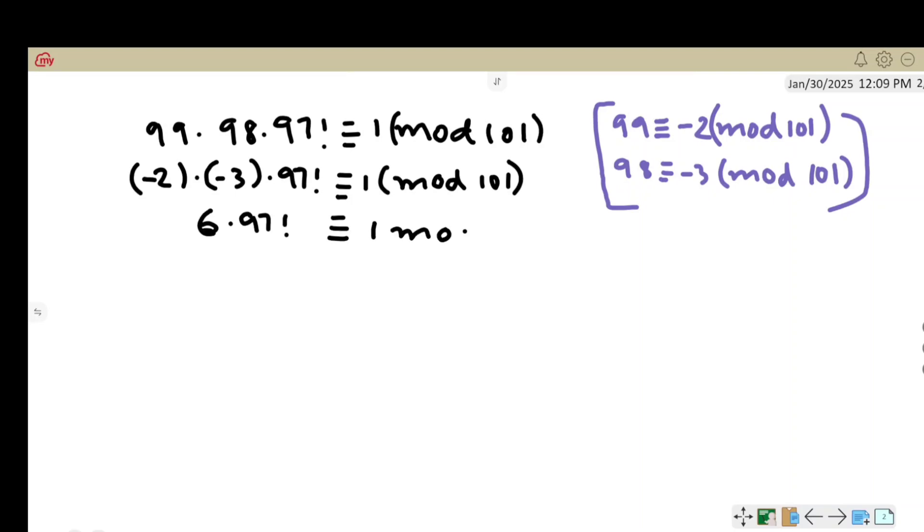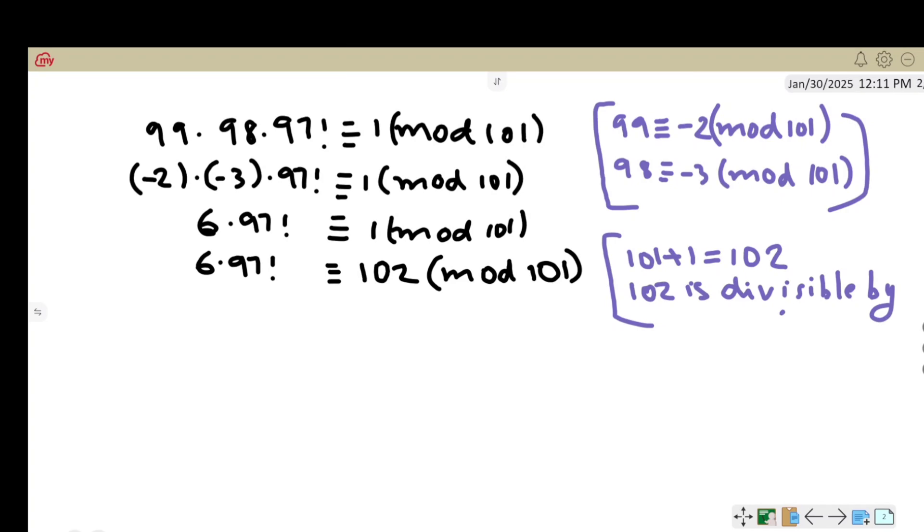That's 6 times 97 factorial congruent to 1 mod 101. We can write it as 6 times 97 factorial congruent to 102 mod 101. We write 102 because 102 is 101 plus 1 and 102 is divisible by 6.